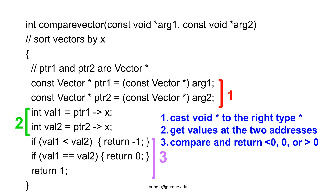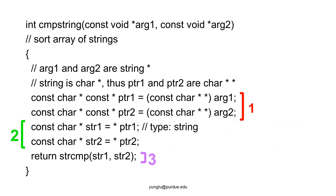The comparison function for strings is a little more complex because each string is an array of characters. Since an array is also a pointer, the input arguments are pointers of pointers. For the first step, imagine C has a type called string — arg1 and arg2 would be pointers of strings, so their types would be string asterisk. C does not have a string type; instead, a string in C is an array of characters, and an array is a pointer. Thus, a string's type is char asterisk. Putting these together, the type of arg1 and arg2 is char asterisk asterisk.